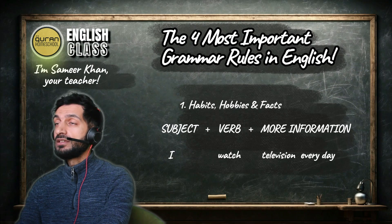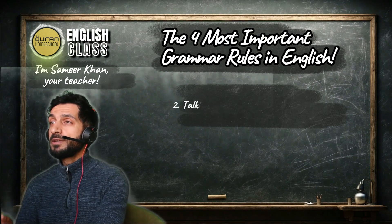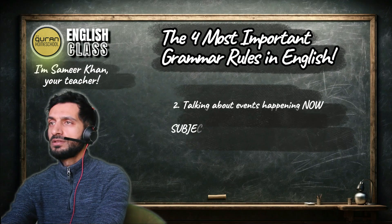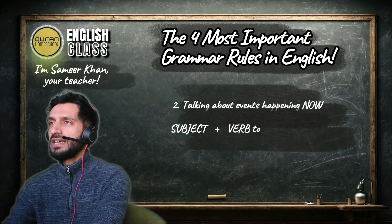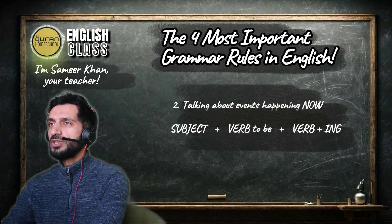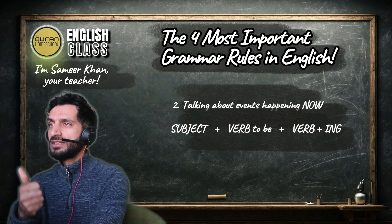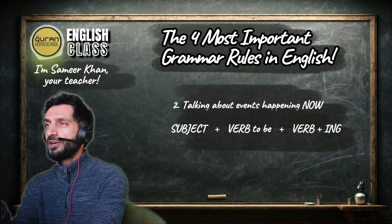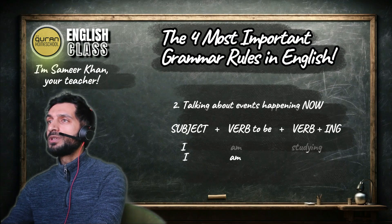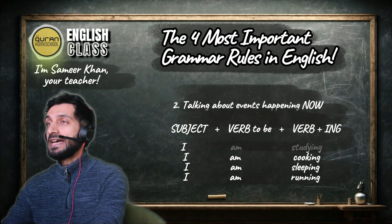Number two — when we speak about now — we have to use four things in the sentence: subject, then the verb to be (am, is, are), then the main verb plus -ing. This is like a formula you can memorize — it will never change. If you want to speak about now: subject, verb to be (am, is, are), then the main verb plus -ing. For example: I am studying, I am cooking, I am sleeping, I am running.